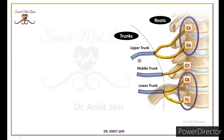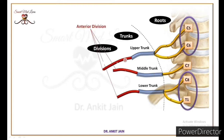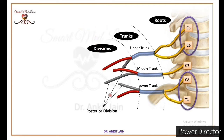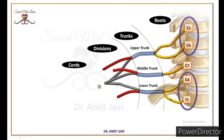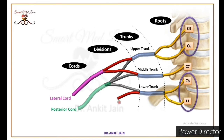Each trunk is divided into the anterior division and posterior division. Ye divisions aapas me mil kar cords ka formation karengi. Tino posterior divisions aapas me mil kar posterior cord ka formation karengi. Anterior division of upper trunk and middle trunk aapas me mil kar lateral cord ka formation karengi. Ab beach gaya hai anterior division of lower trunk, jo aage chal kar medial cord ka formation karegi.